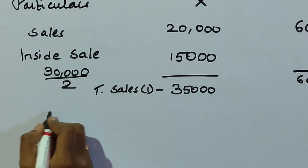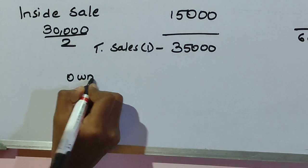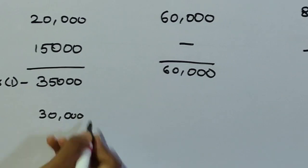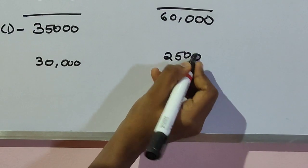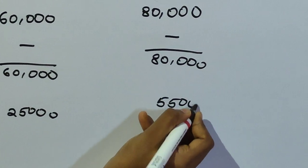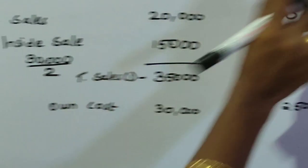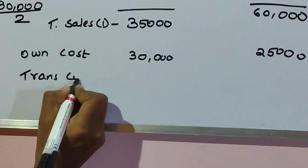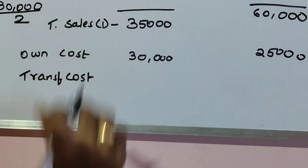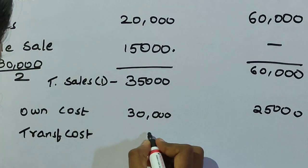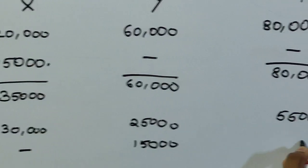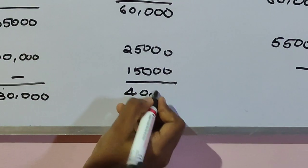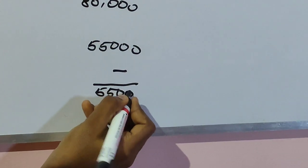Next, deduct cost. Own cost: X is 30,000, Y is 25,000, and the company total is 55,000. There is also a transfer cost for Y, because Y is buying from X and has to pay for that transfer. The transfer cost is 15,000 for Y. The company has no transfer cost. Total cost: X = 30,000; Y = 25,000 + 15,000 = 40,000; Company = 55,000.